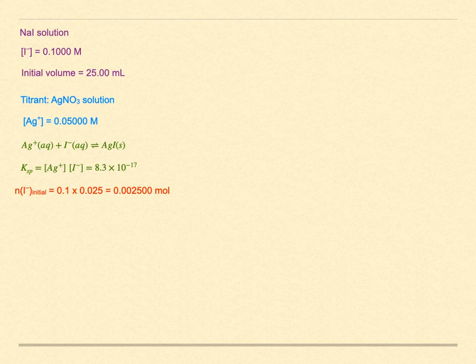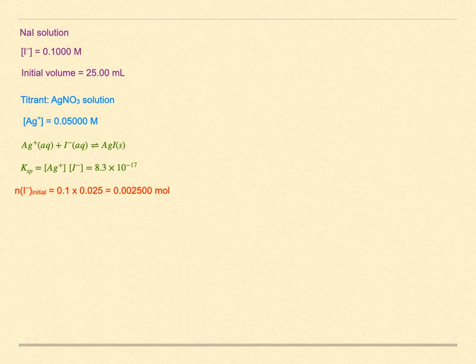As with other titrations, we can split the calculation into four different ones: the beginning, the equivalence point, the region between the beginning and the equivalence point, and the region past the equivalence point. Experimentally, we could follow the silver ion concentration electrochemically using an ion-specific electrode for silver ions. The experiment would be essentially like an acid-base titration, except that at the beginning, there is no silver present.